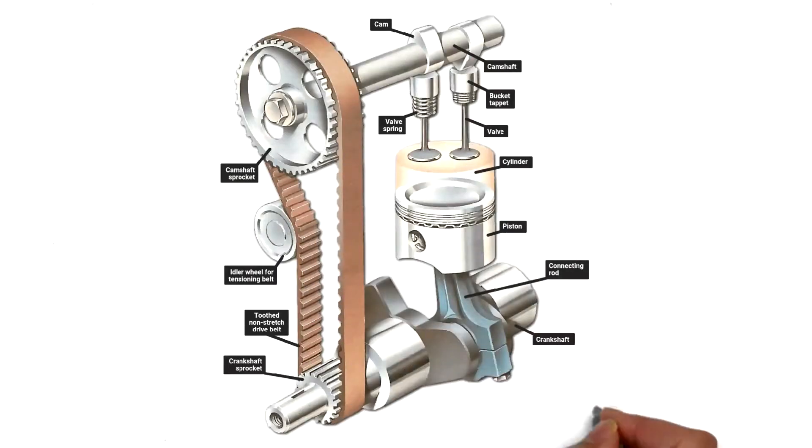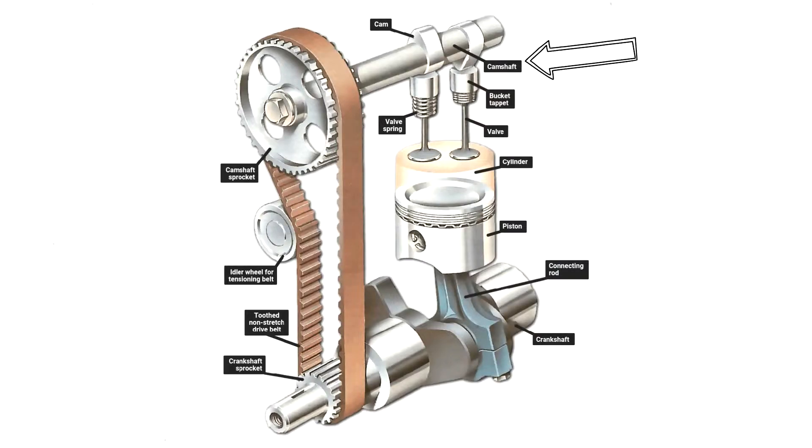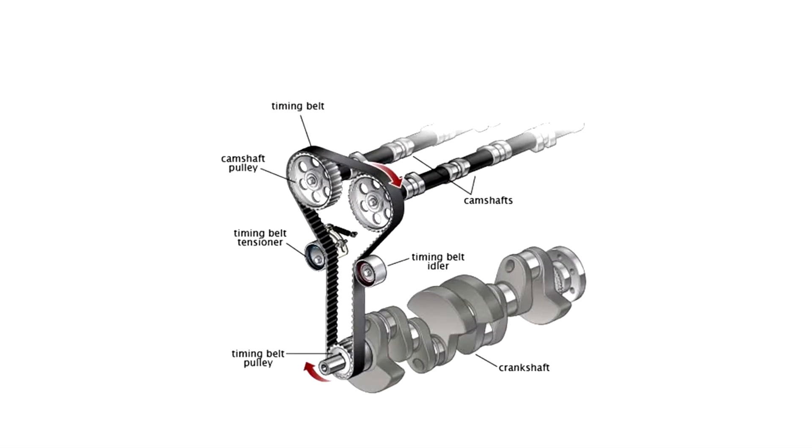Camshafts with specially shaped cams push firing-loaded valves open in turn. Cam gears and timing belt or chain links everything to the crankshaft and it all spins together.